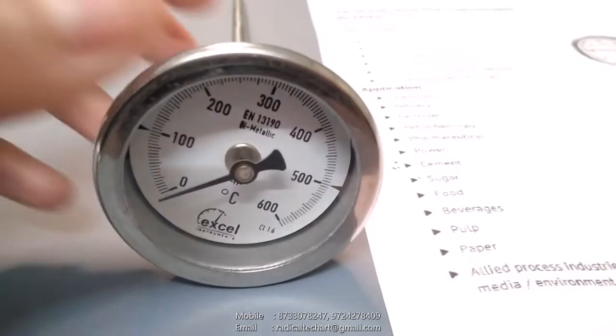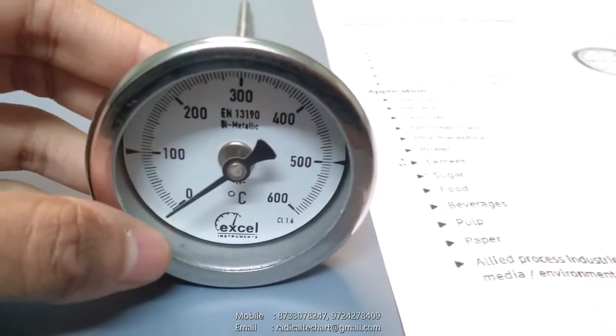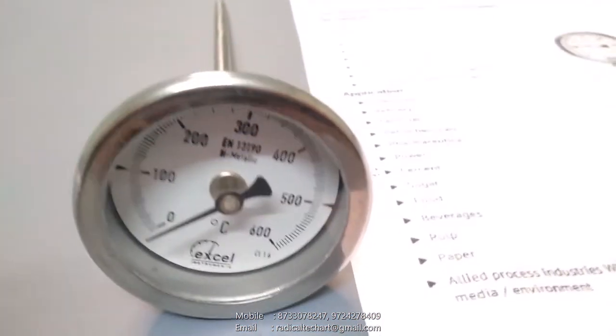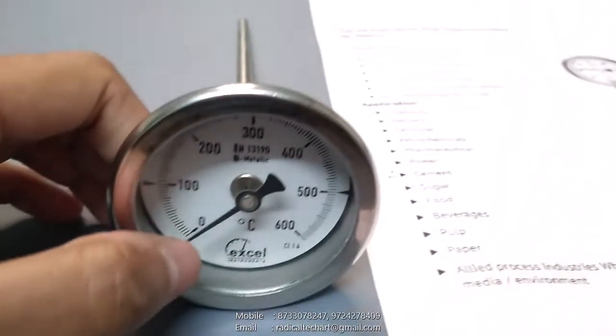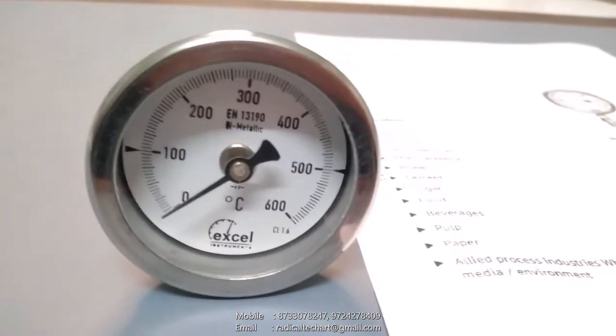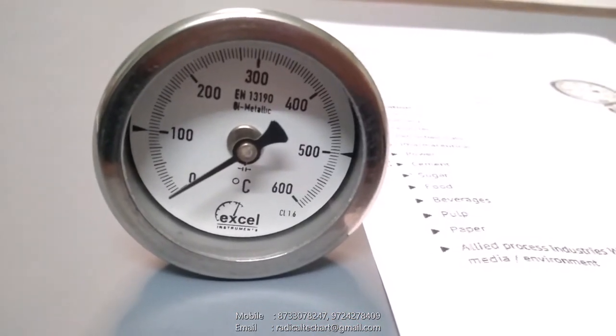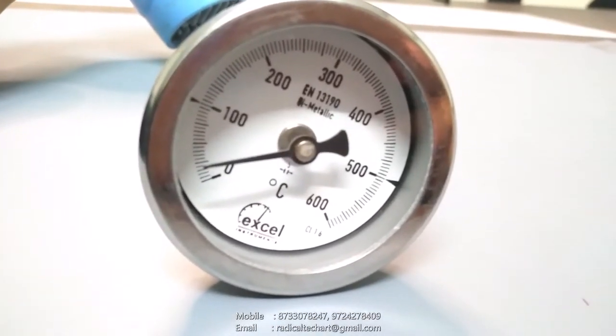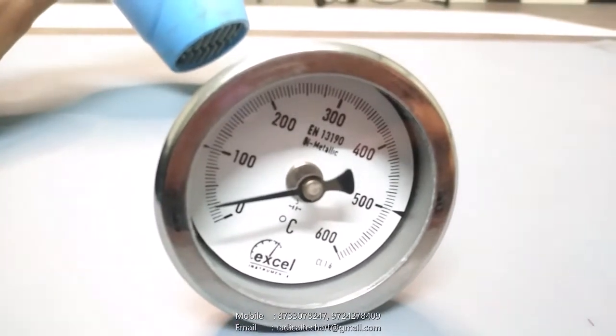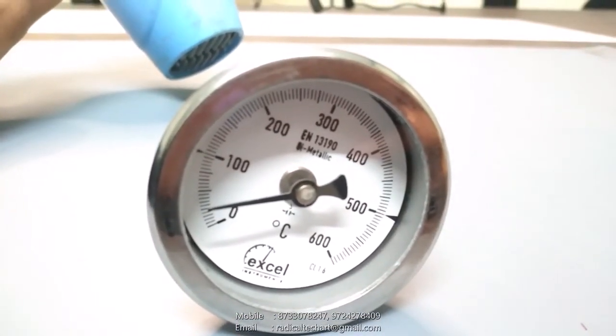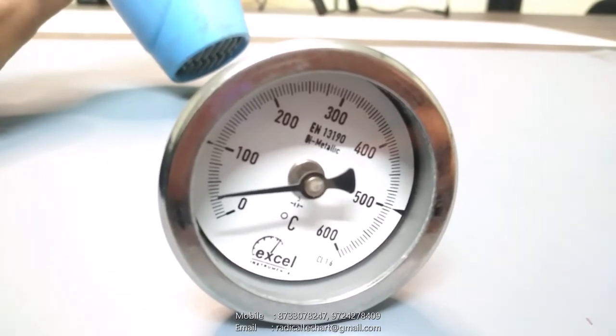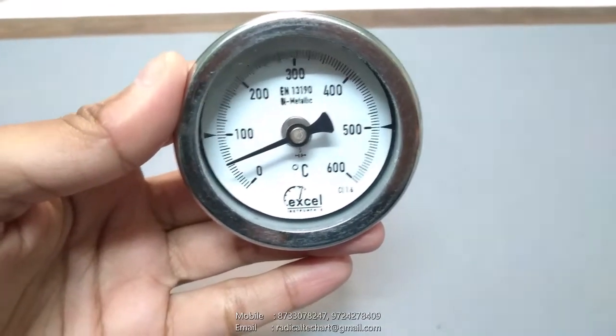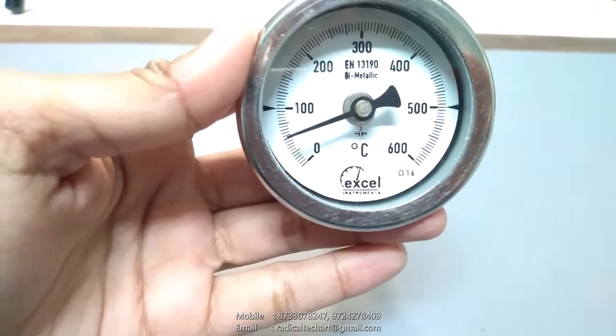You can see one model which is bi-metallic temperature gauge. When I give heat to this temperature gauge the reading will be shown here. Let's check its results. You can see here temperature will increase. You can see the temperature here, it is almost 50 degrees centigrade.